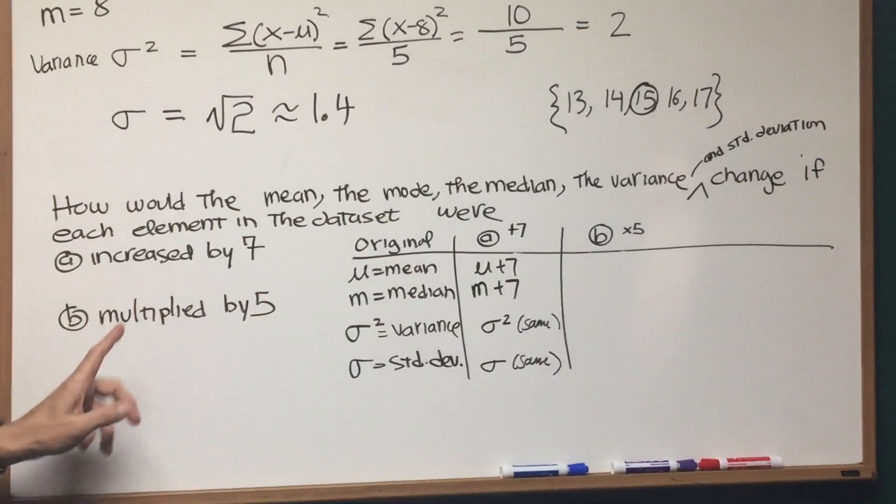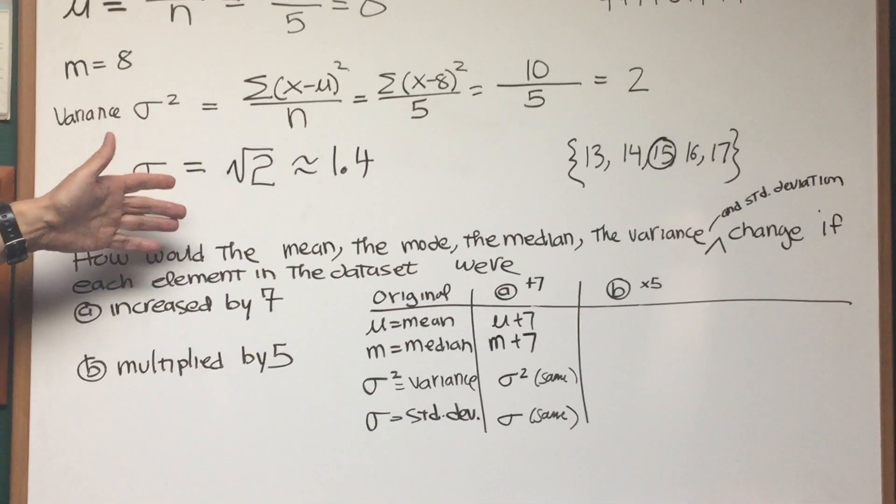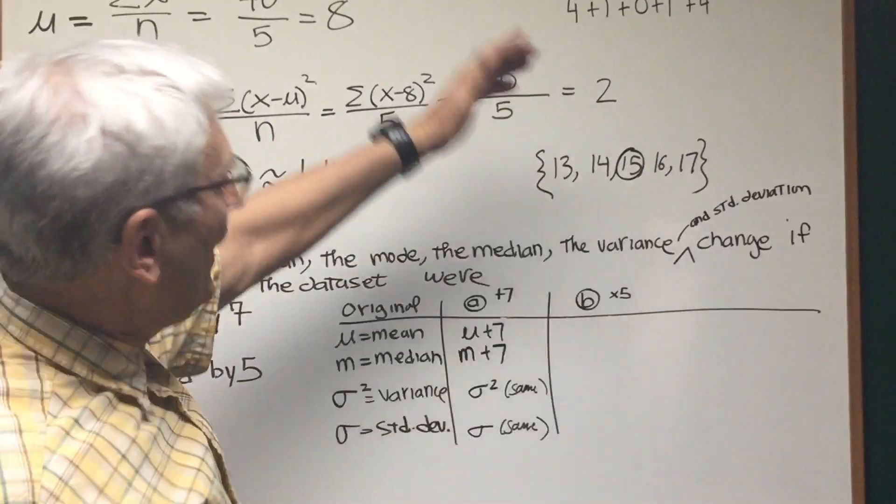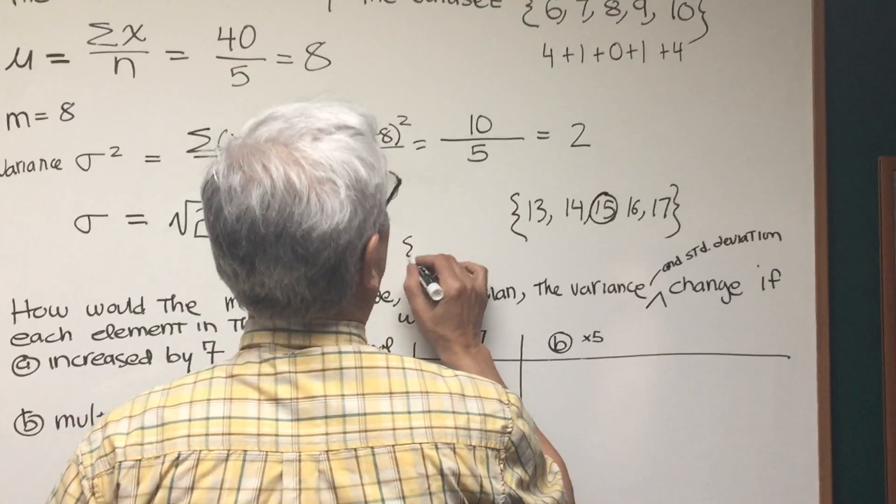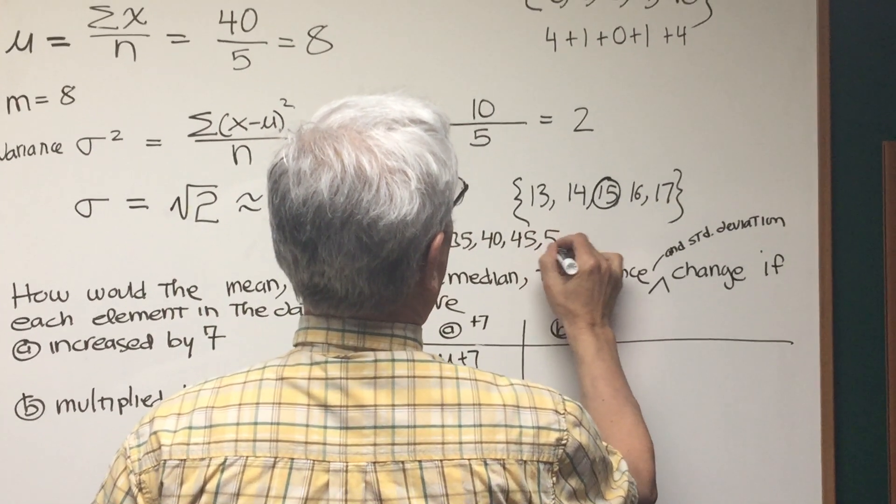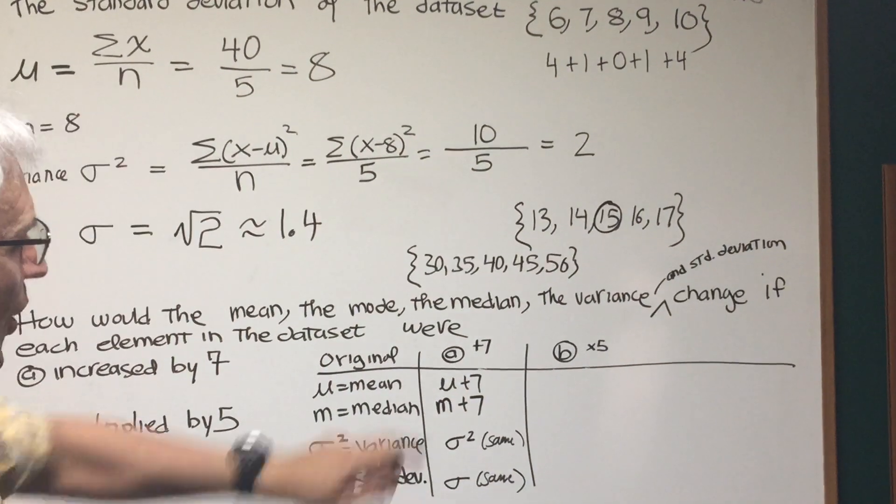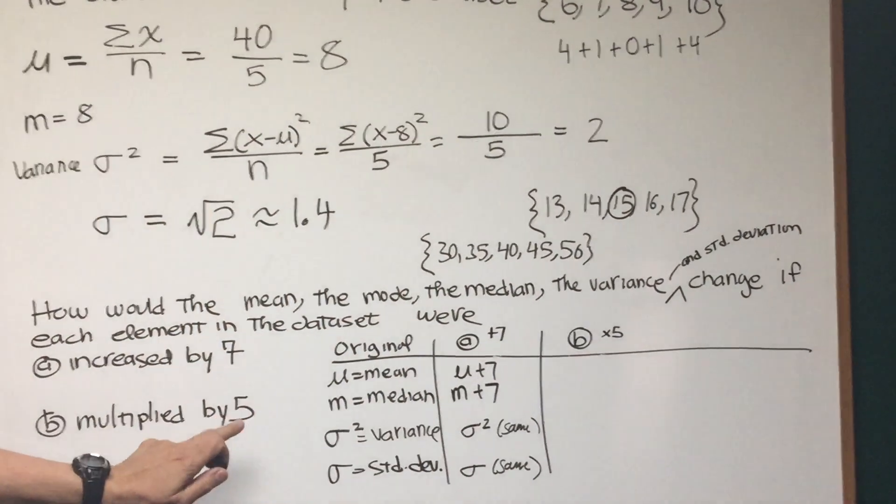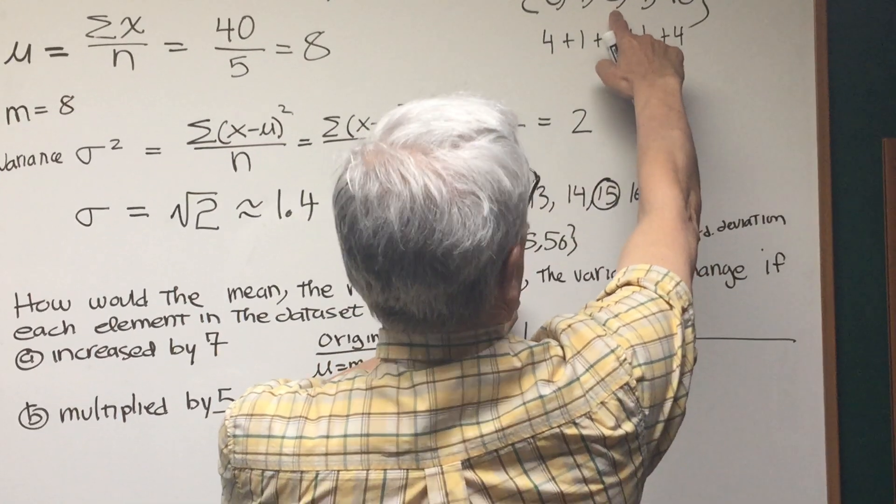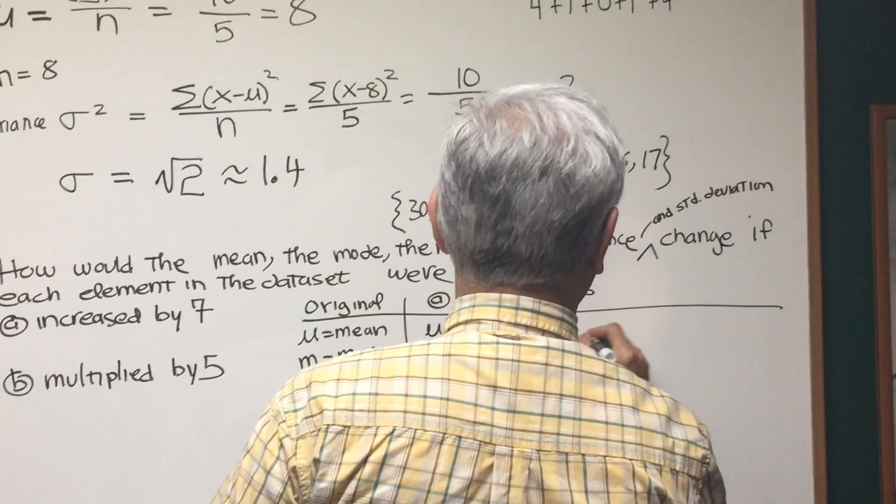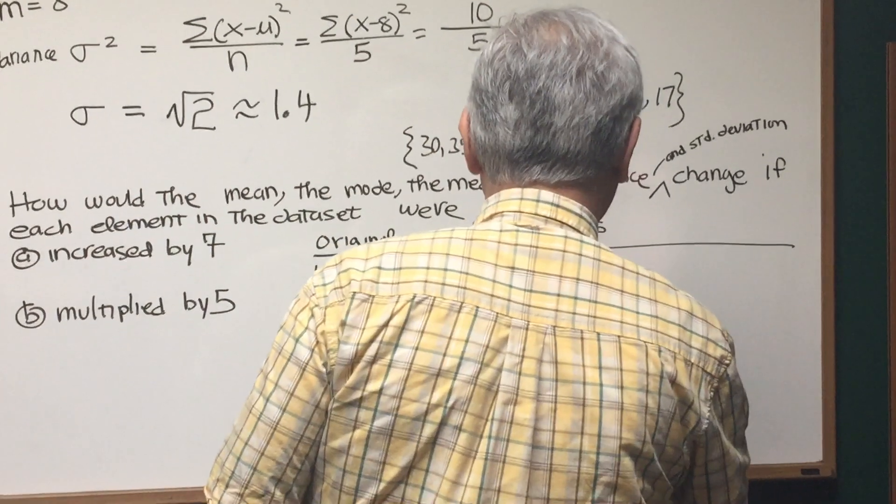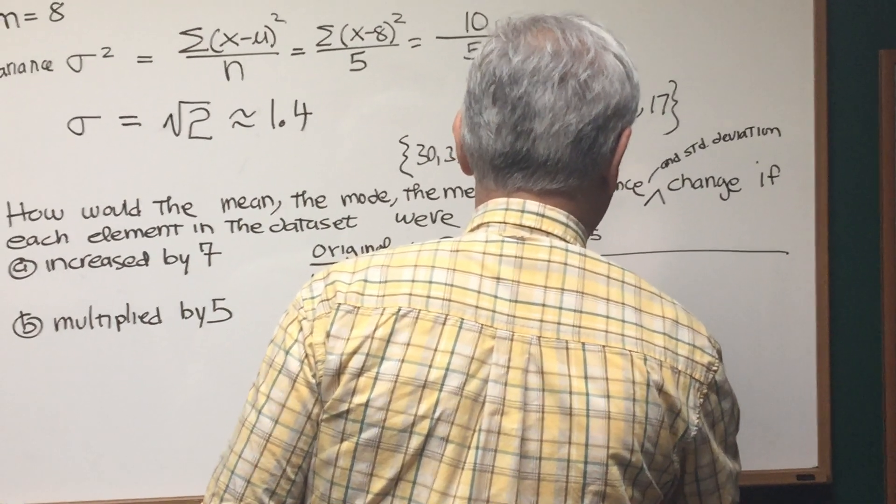All right, now let's go and answer part B. What would happen to each of these statistics if each element in the data set were multiplied by 5? We can write that out. 5 times 6 is 30, 35, 40, 45, 50. You can see that the mean is also going to be multiplied by 5. So you can see the mean here is 40, and 5 times 8 is 40. So it's going to be 5 times the mean. Same thing with the median. The median is simply going to be multiplied by 5.